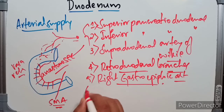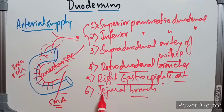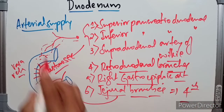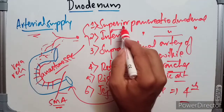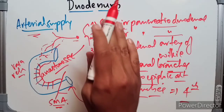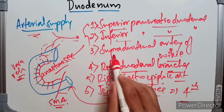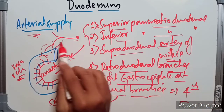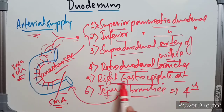We also have the jejunal branches of the superior mesenteric artery; a branch from the jejunal branch will supply the fourth part of the duodenum. In summary, the duodenum is supplied by the superior pancreaticoduodenal artery from the gastroduodenal artery, the inferior pancreaticoduodenal artery from the superior mesenteric artery — these two anastomose to form the anterior and posterior arterial arcades giving vasarecta. Additionally, the supra-duodenal artery of Wilkie, retro-duodenal branches from the hepatic artery, branches from the right gastro-epiploic artery, and jejunal branches of the superior mesenteric artery all contribute.